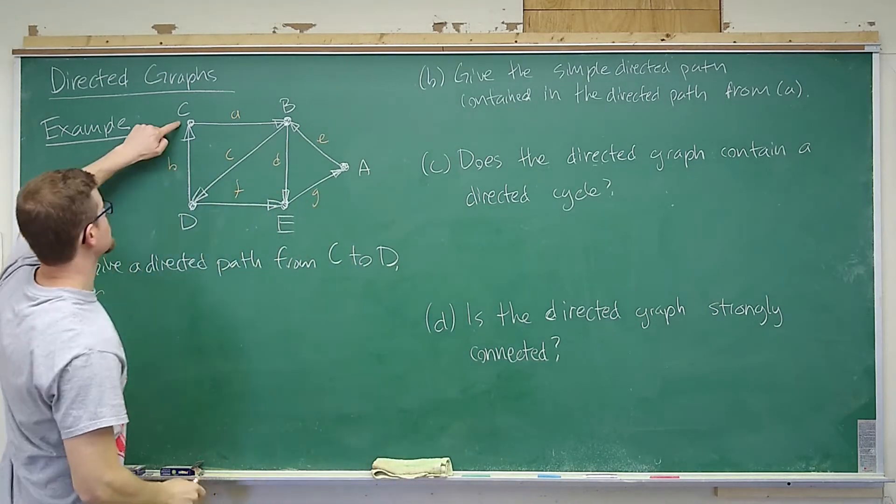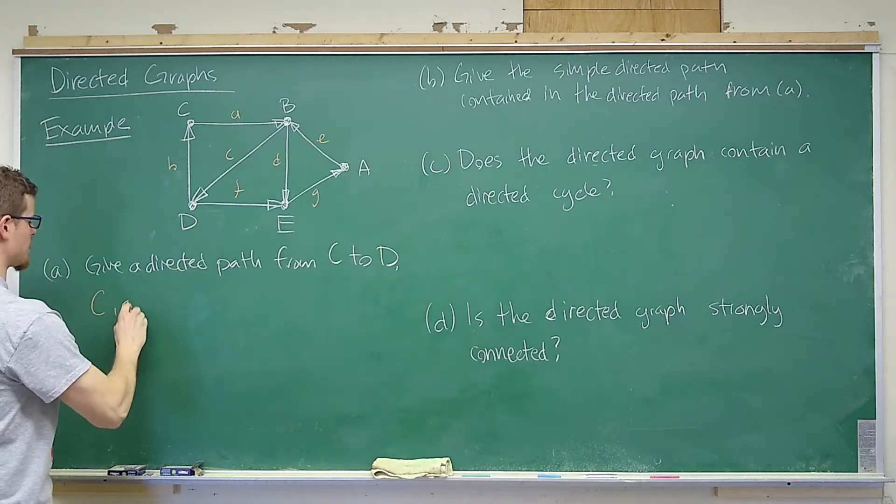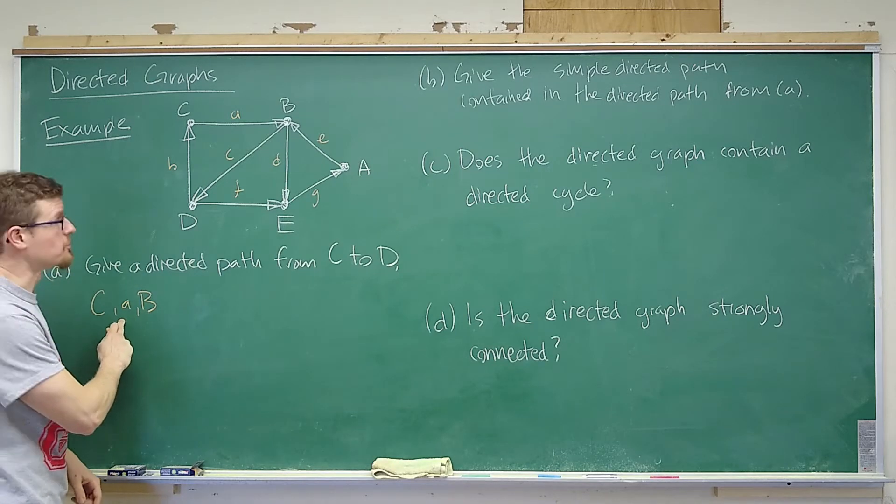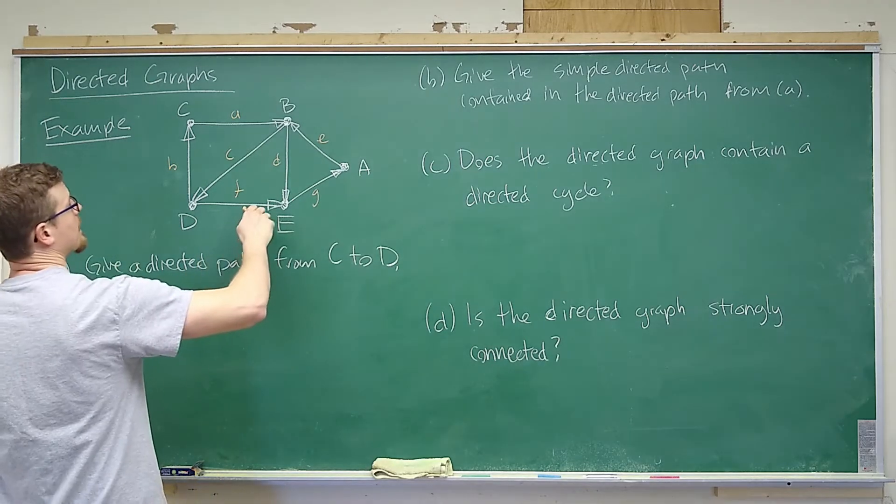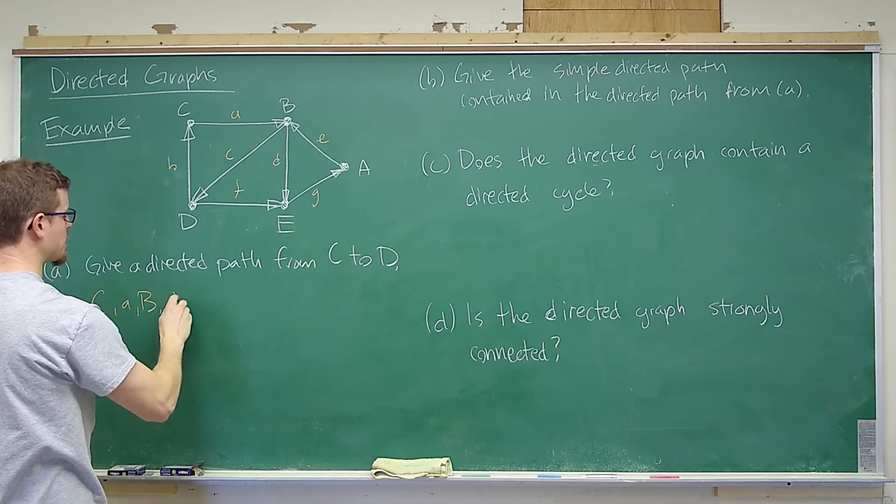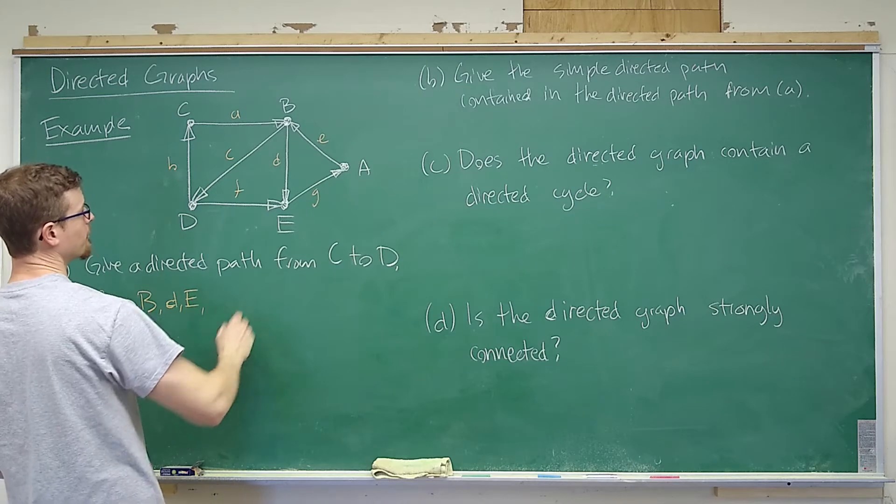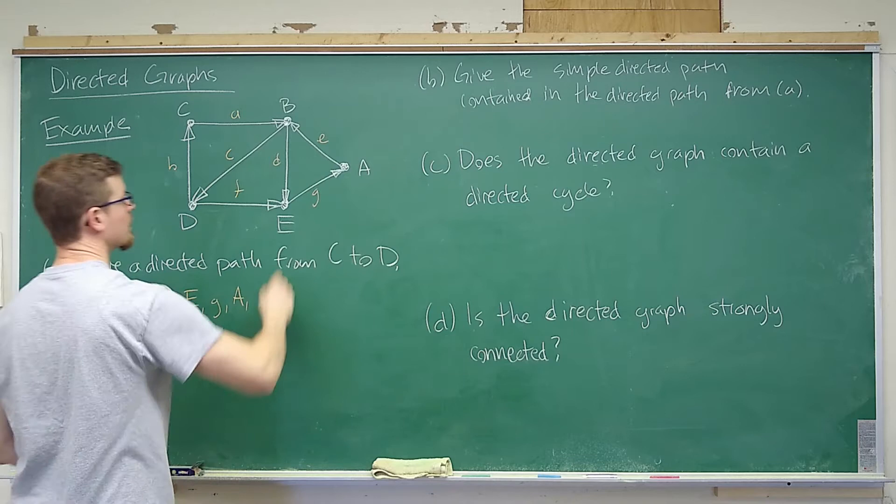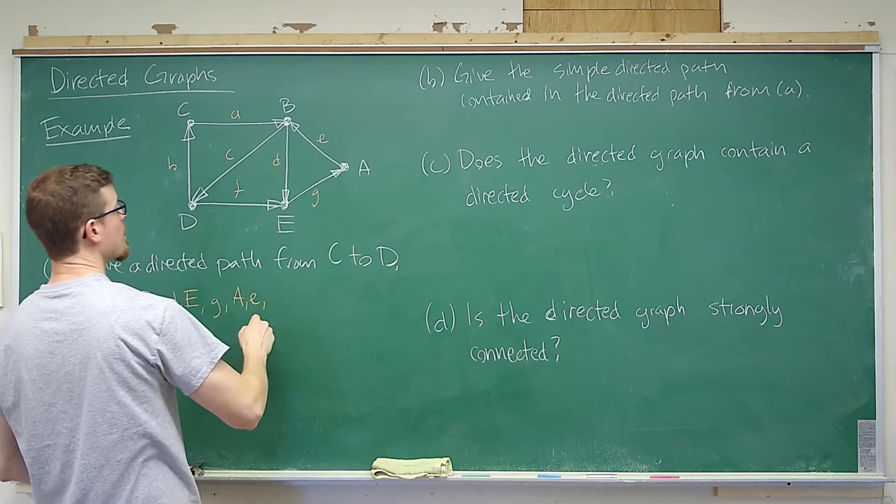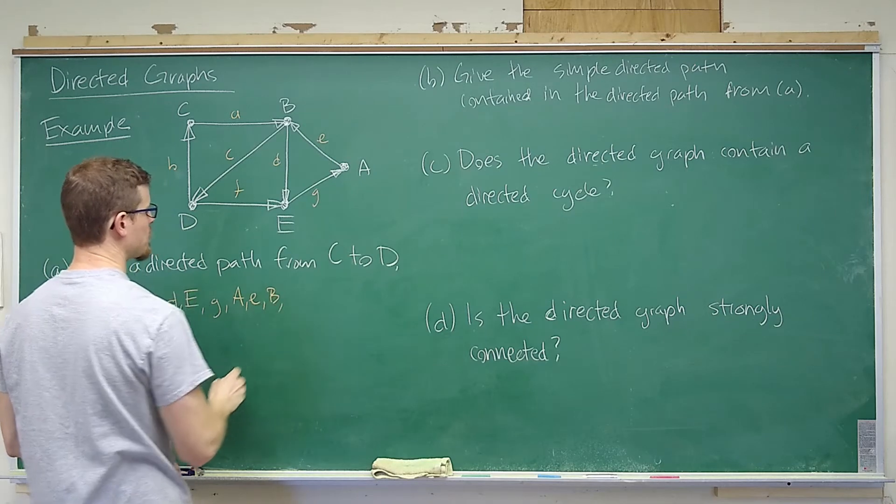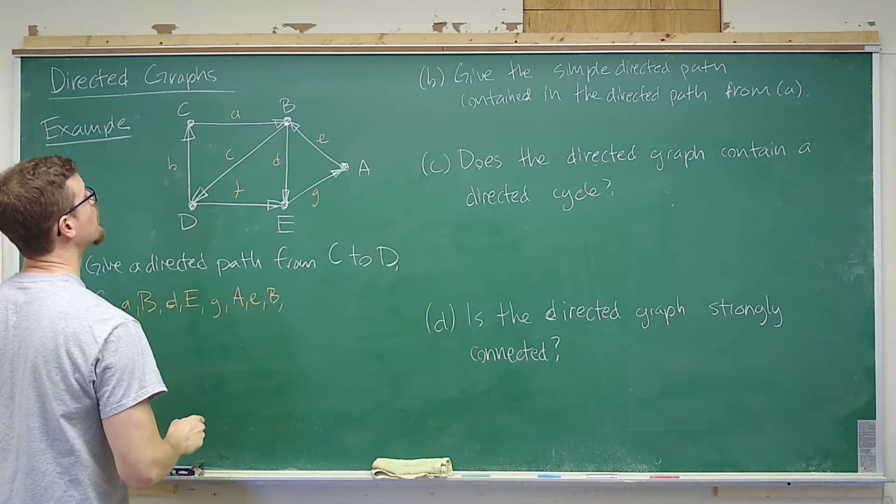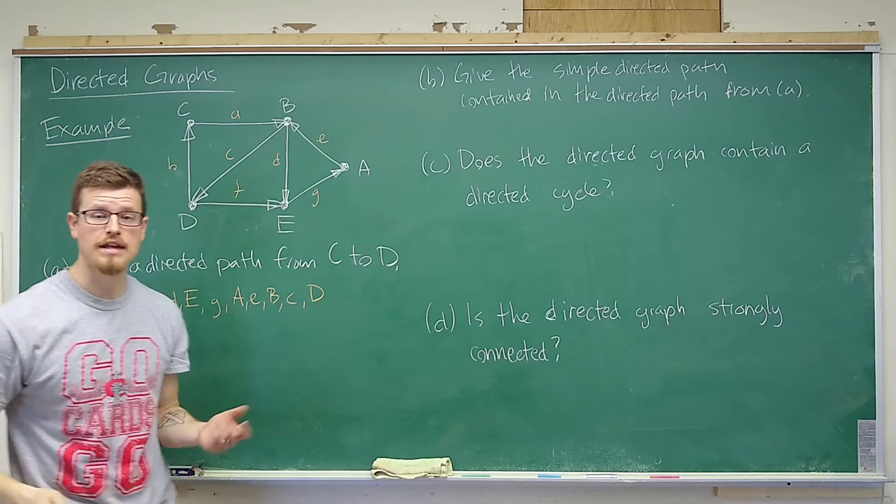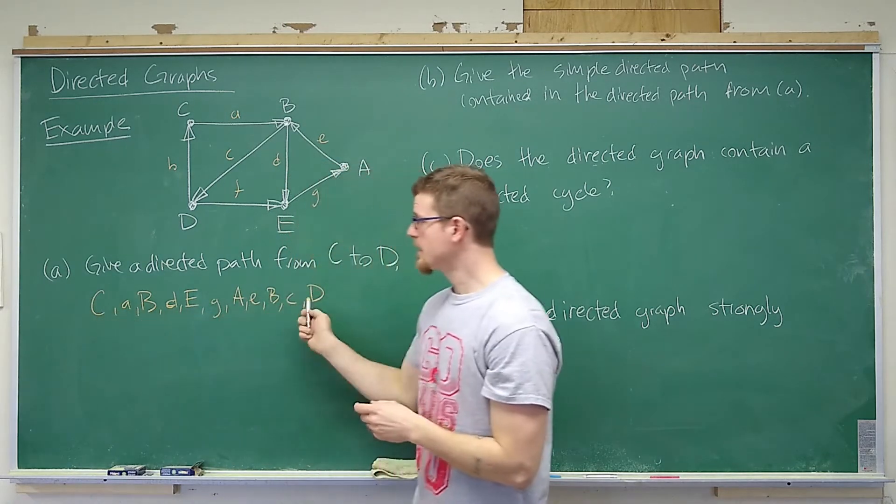So with this I can travel C along A to B. So C, A, B - travel from vertex C to vertex B along the edge A. Then what I'd like to do is I'd like to travel along the edge D to the vertex E, then along the edge G to the vertex A, and then along the edge E from vertex A to vertex B, and then along C to vertex D. So that gives us a path from C to D.